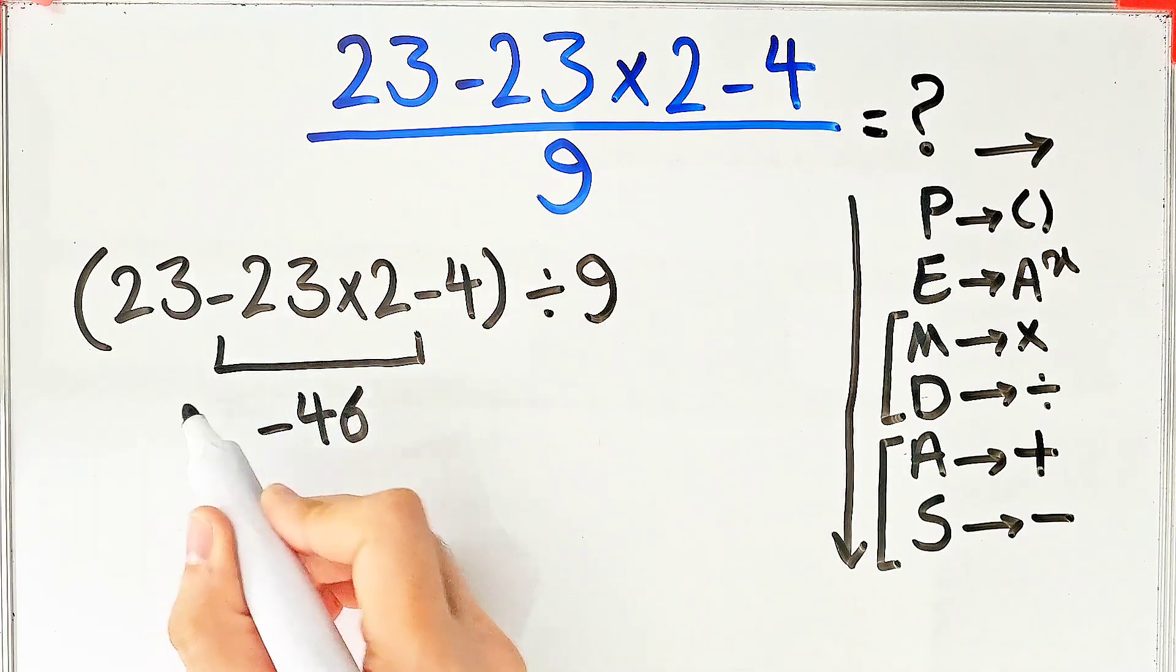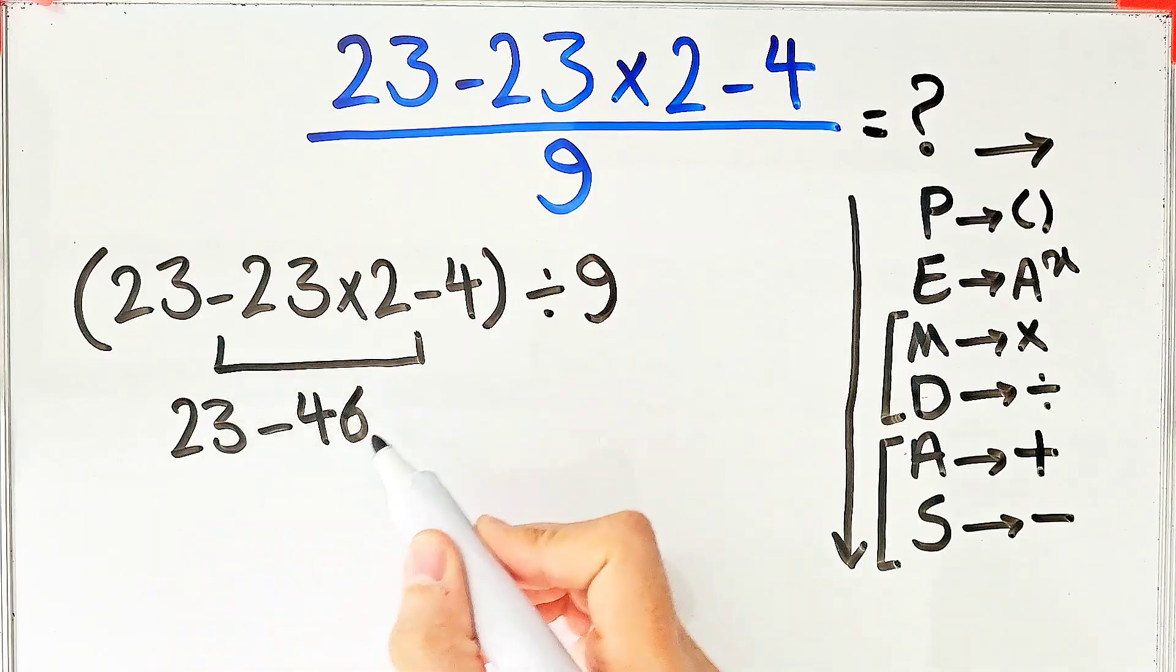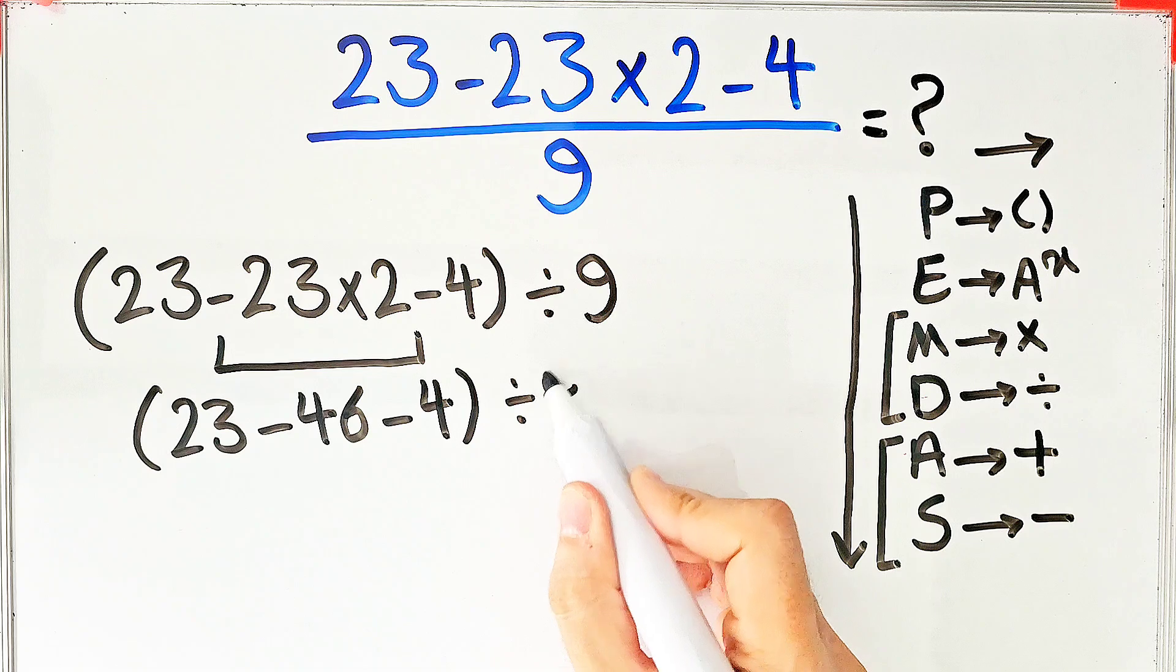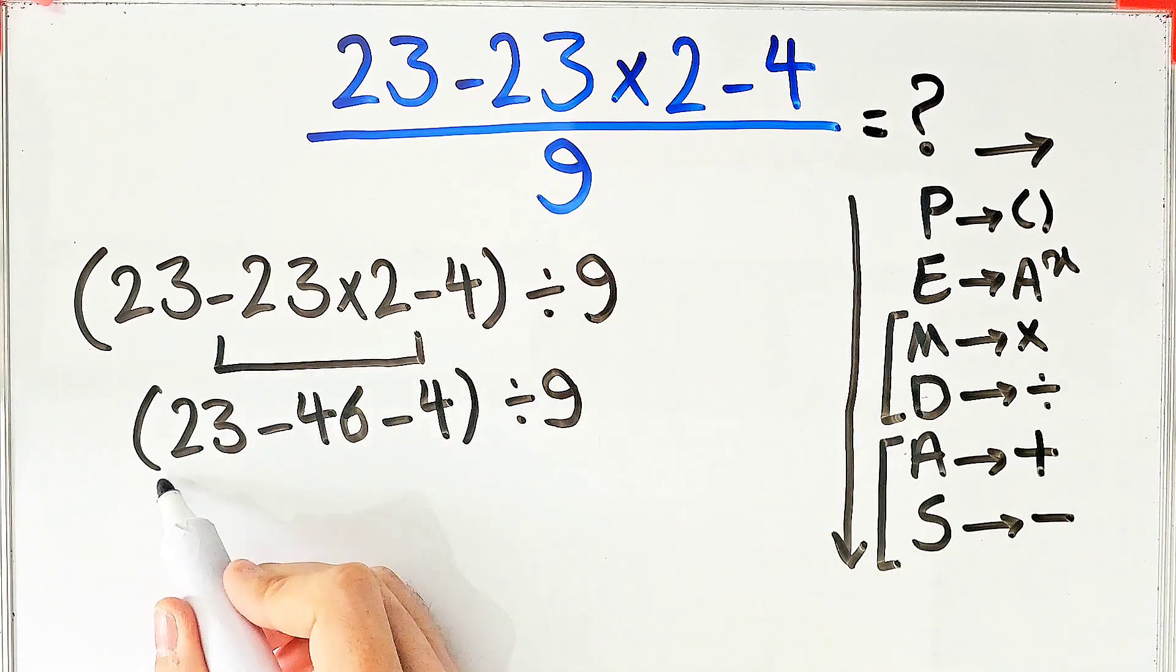Now we have 23 minus 46 minus 4, then divided by 9. Again we simplify the parentheses. 23 minus 46 equals negative 23.